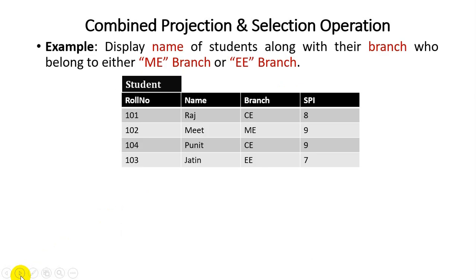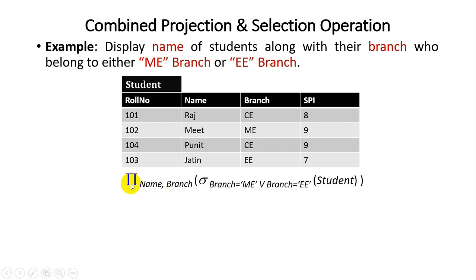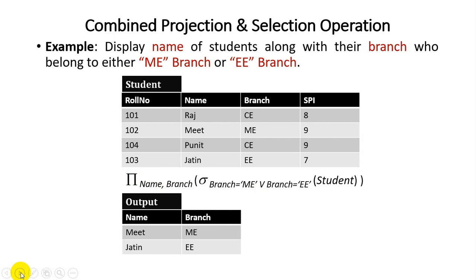Next example: display name and branch of students who belong to ME branch or EE (double E) branch. The user requires only name and branch of students from ME or EE. We apply a selection operation with an OR condition: branch equals ME OR branch equals EE on the student relation. Then we apply projection on name and branch. The result shows Myth belonging to ME and Jetting belonging to EE branch.